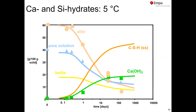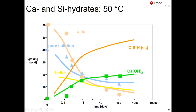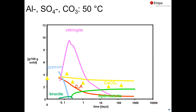Here is an example at five degrees: you can see that the reaction of alite is much slower, and we only finish maybe after two weeks. If we do it at 50 degrees, the alite reaction is very fast and we also have a fast formation of portlandite. For the aluminate-sulfate-carbonate phases, we predict at low temperature a fast formation of ettringite and some monocarbonate. At 50 degrees, we predict that ettringite is mainly present at the beginning and later it will be replaced by monosulfate, because the combination of ettringite and monocarbonate becomes unstable at higher temperature.